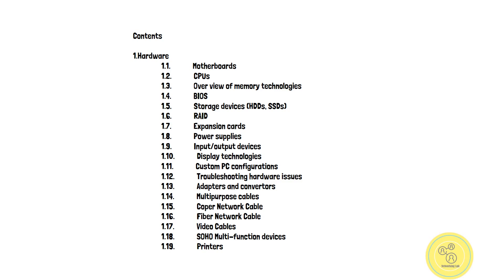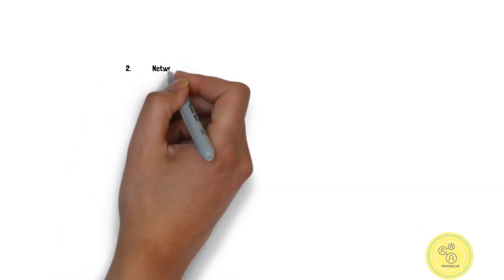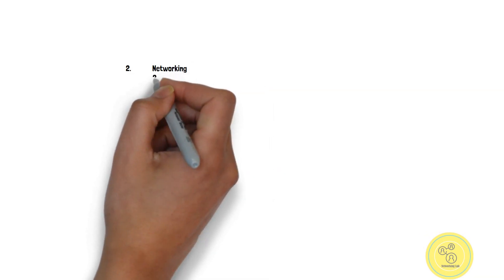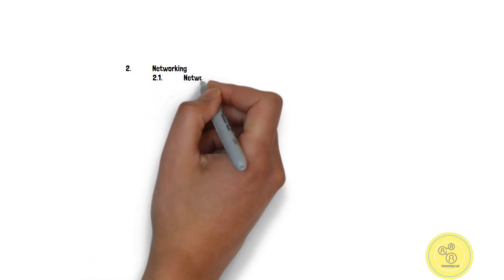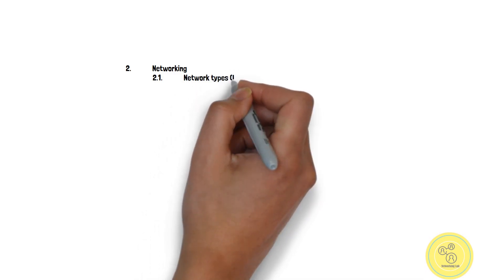We have a SOHO multi-function device. We have a printer. We have a course section for networking. We have network types and network type configurations covered in the course.